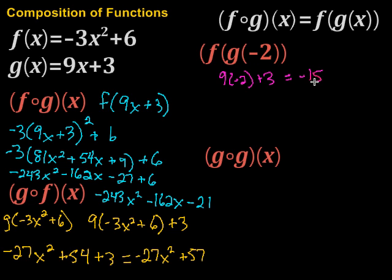So g of negative 2 yielded me negative 15. So that means I'm going to take that negative 15, insert it into the f function, and see what I get out from there. So now I'm going to take negative 3 times negative 15 squared plus 6. So again, I found g of negative 2 to be negative 15, then I take negative 15 and I put it into the f function.